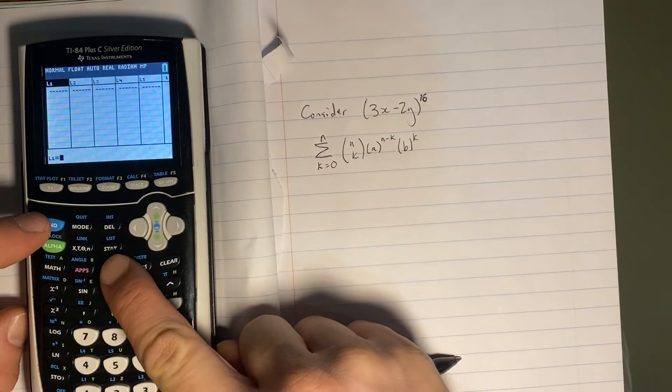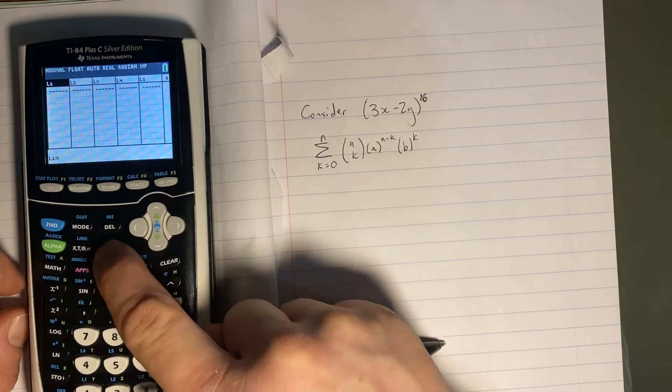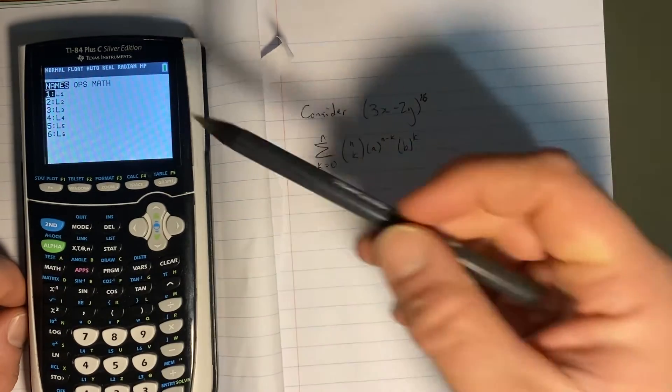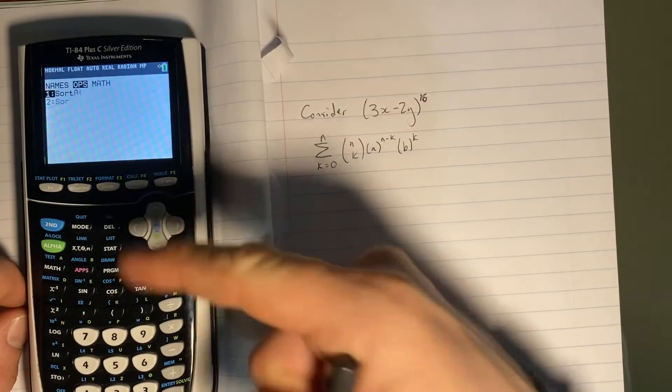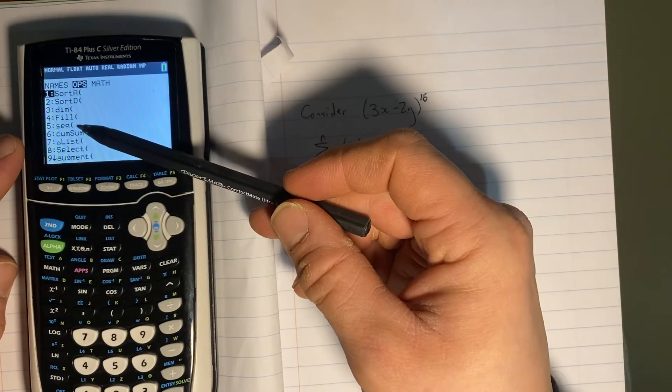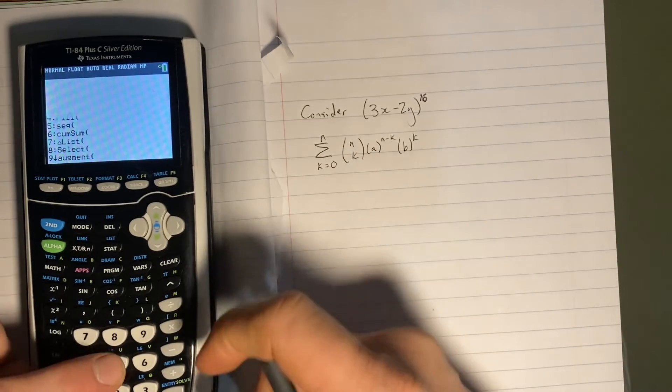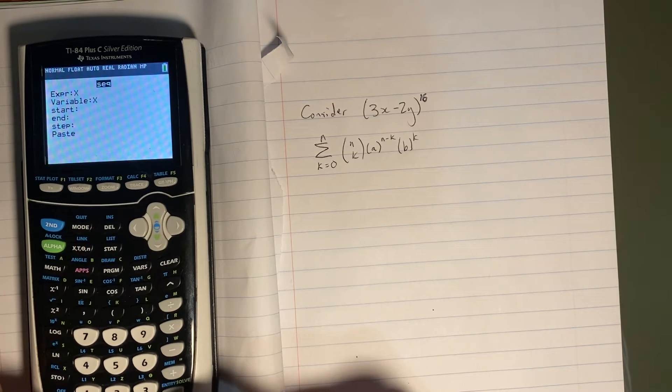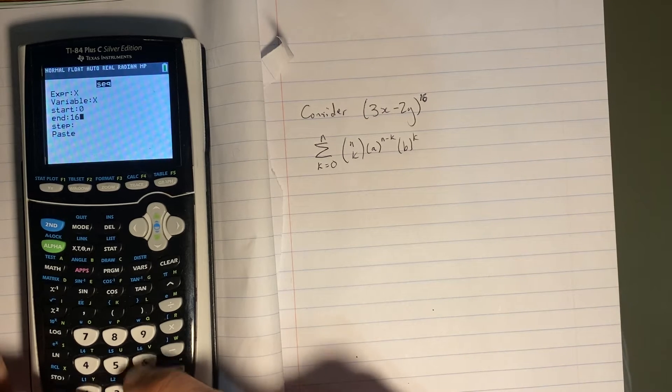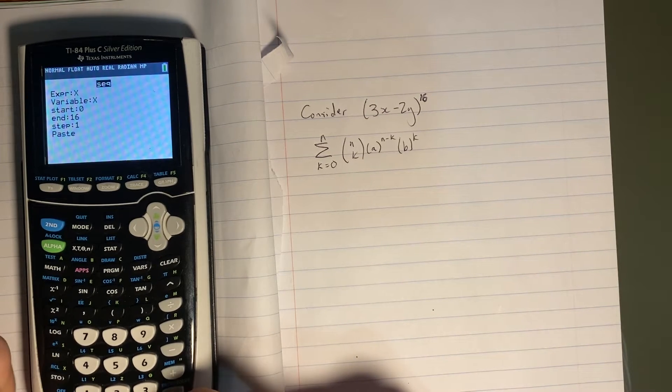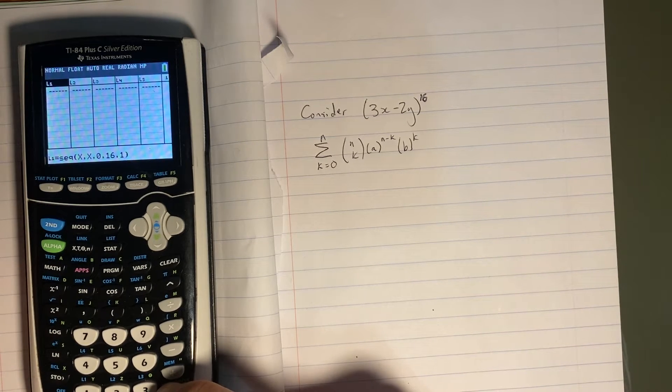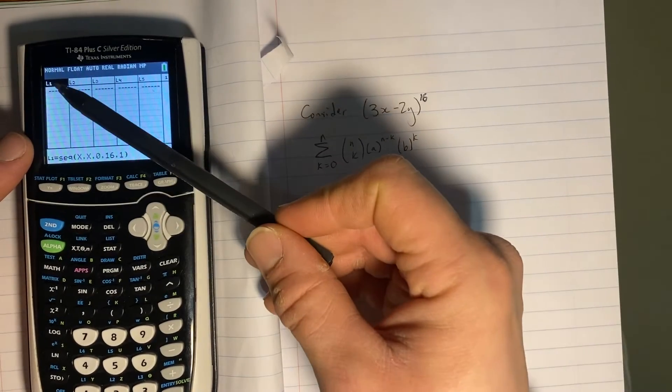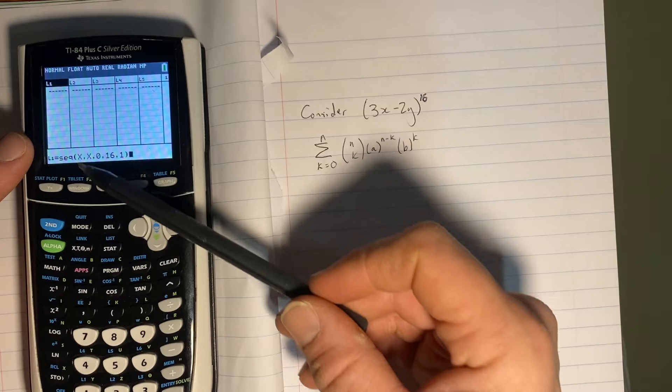Now, I'm going to access list, which is directly above stat. So I'll press second function stat to access list. And I'm going to go over to ops for operations. Now, the operation I want to do is I want to add a sequence in. So I'm going to go to 5 for sequence. And my expression and variable are just simply going to be the variable values x and x. And I'm going to start it at 0 and end it at 16. And my step is going to be 1 because it's going up each time. Now, when I press paste, it's going to fill in all the stuff I need to go ahead and put in all the values from 0 to 16 there.